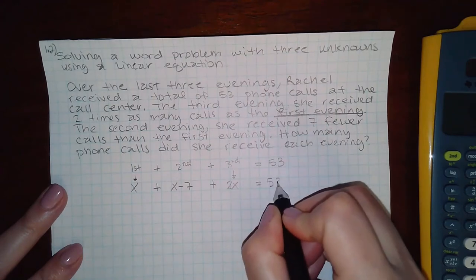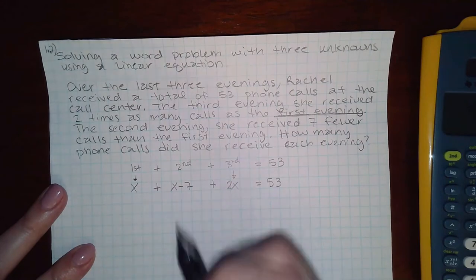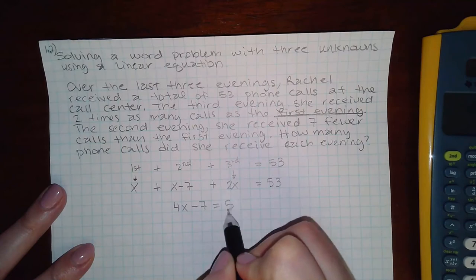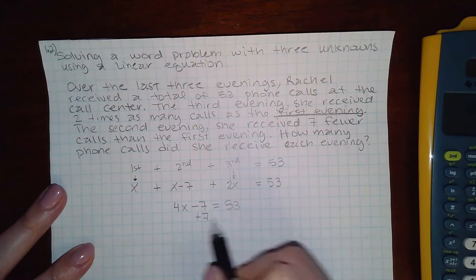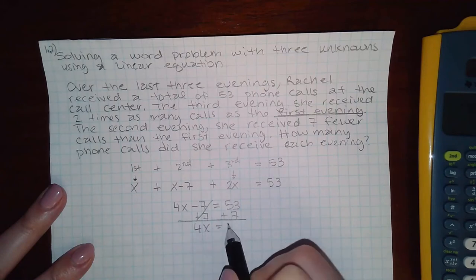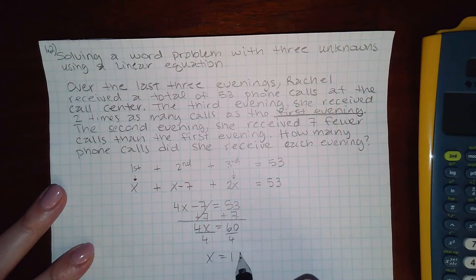And now I have the expression that I need to solve for x. So we combine all of our like terms, we get 4x minus 7 equals 53. If I add seven to both sides, I get 4x equal to 60. And then if I divide by four on both sides, I get 15.